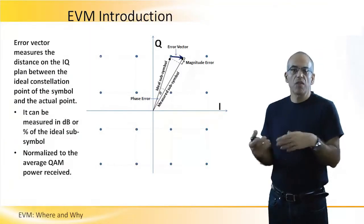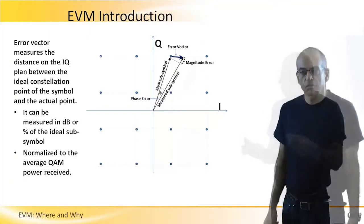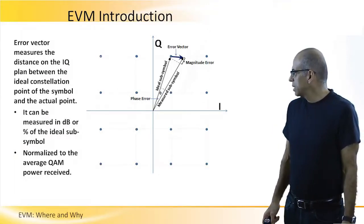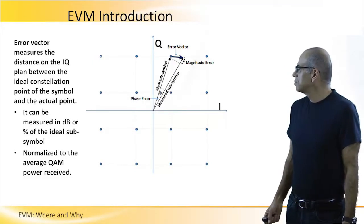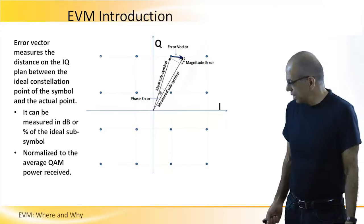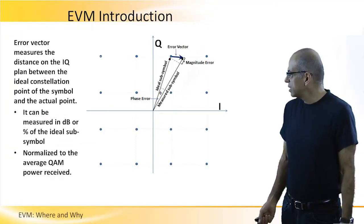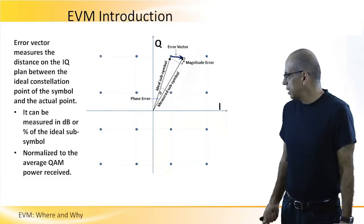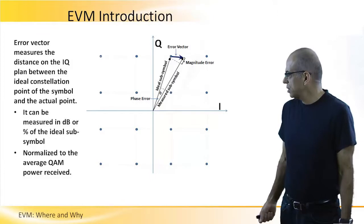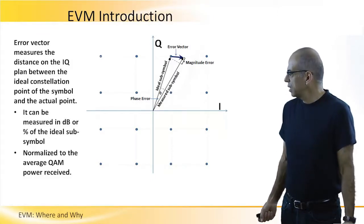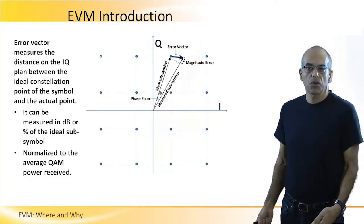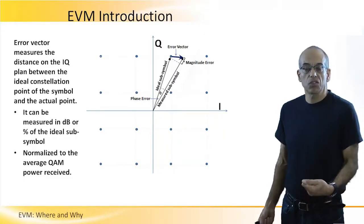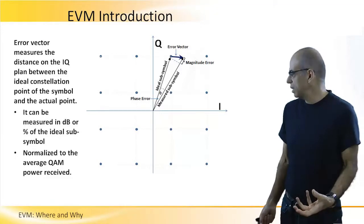The error vector magnitude is normalized to the average QAM power received. We understand that the different symbols may have different amplitudes, and the same error vector may reflect a different average when measuring this error. So we actually normalize the error vector found at each constellation point to the average power received in the receiver.